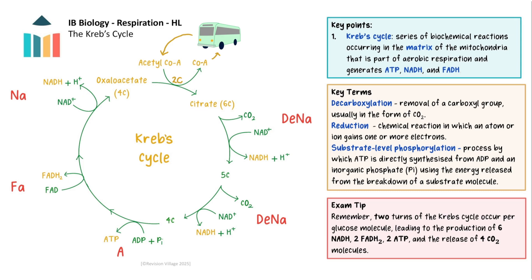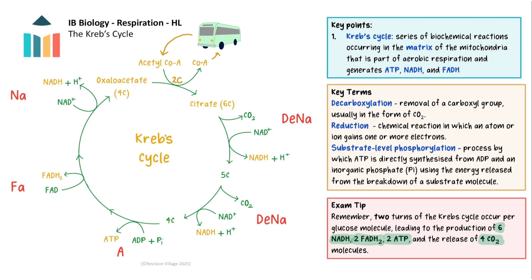There is a helpful mnemonic to remember the order of these reactions: A for ATP produced, FAD and NAD reduced. For each glucose molecule, there are 2 turns of the Krebs cycle, resulting in 6 NAD being reduced, 2 FAD being reduced, 2 molecules of ATP, and 4 molecules of carbon dioxide released. The reduced coenzymes NAD and FAD carry the hydrogen and electrons to the electron transport chain, which comes next.